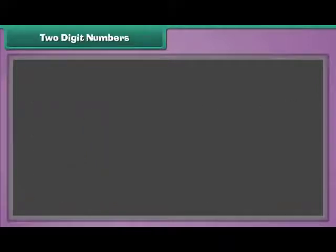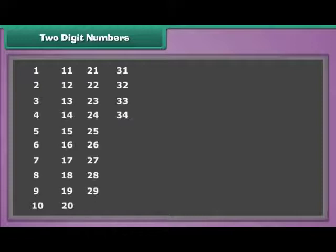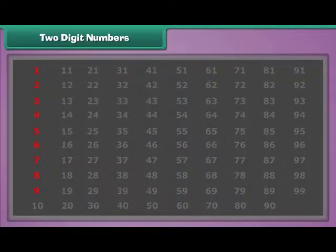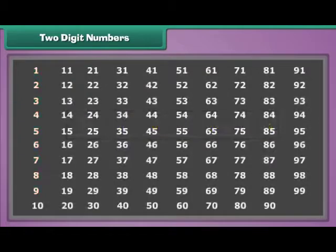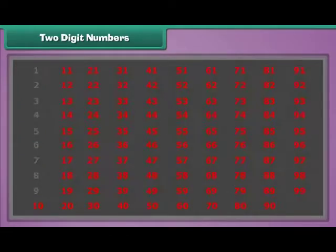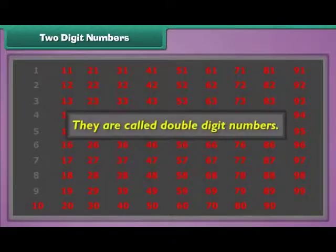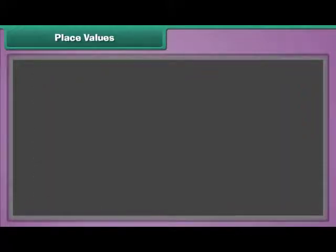The numbers from one to nine have only one digit each. Therefore, they are called single-digit numbers. The numbers from ten to ninety-nine have two digits each. Therefore, they are called two-digit or double-digit numbers.